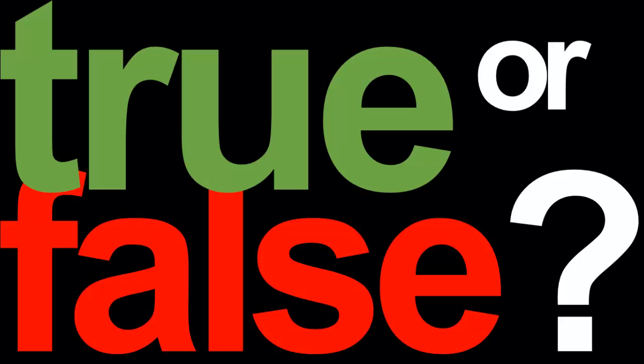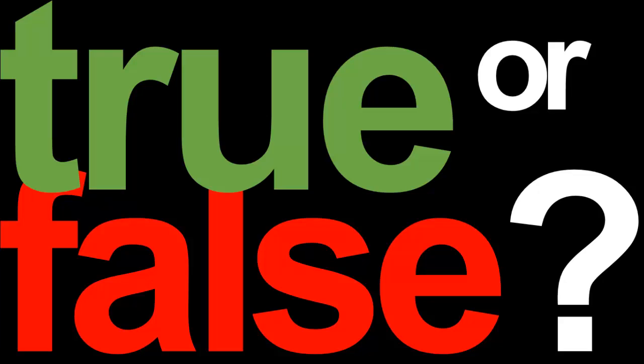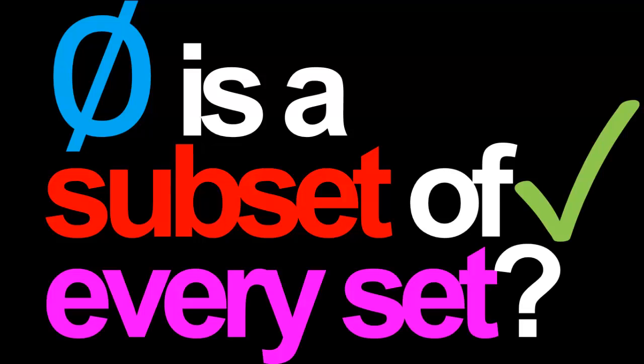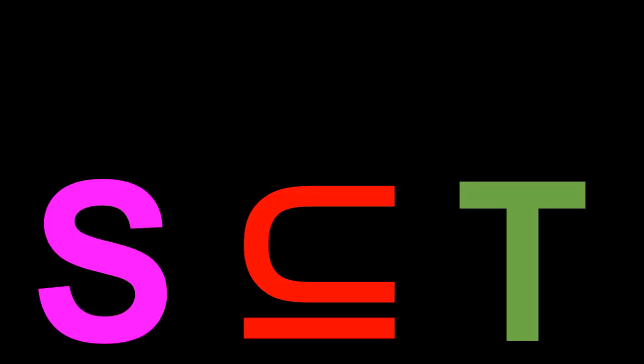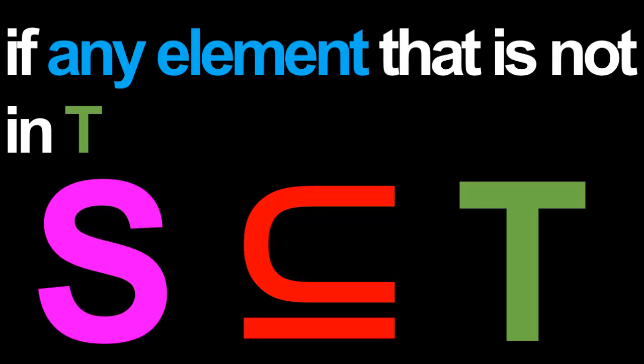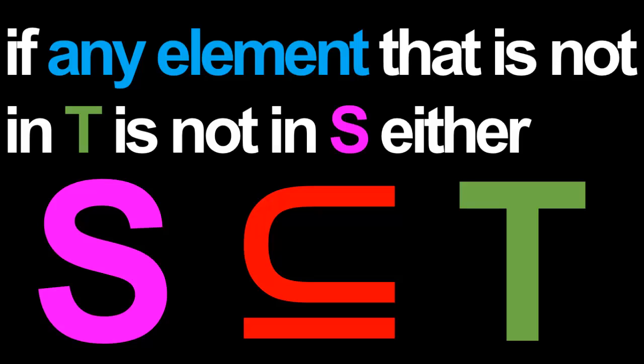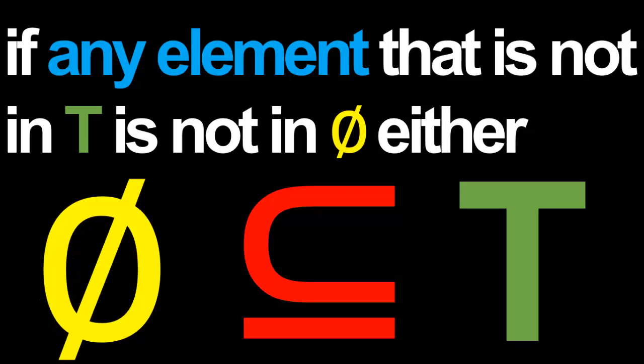The next true-false question is super tricky and has tortured students the world over, so don't be too surprised if you get it wrong at first. The empty set is a subset of every set. True! Let's see why. Recall our alternative definition: given two sets S and T, we say that S is a subset of T if any element that is not in T is not in S either. If we replace S with the empty set, the definition is clearly satisfied, since the empty set has no elements whatsoever.